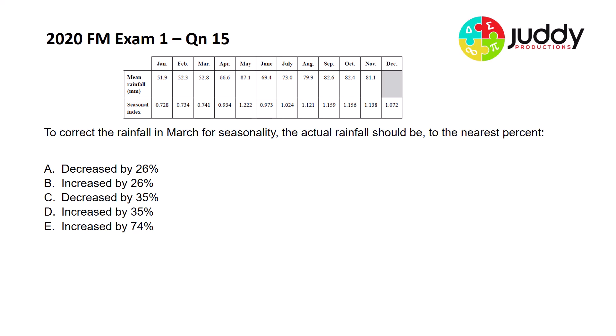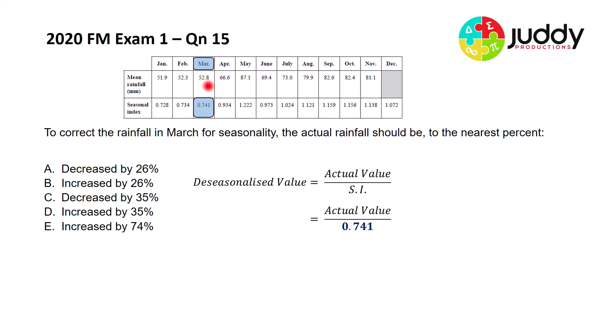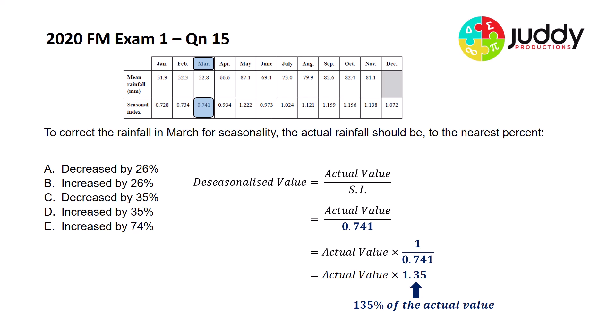A similar question from 2020: to correct the rainfall in March for seasonality, the actual rainfall should be — to the nearest percent. March has a seasonal index of 0.741. Dividing by 0.741 is the same as multiplying by 1 over 0.741, which as a decimal is 1.35. So we're effectively multiplying the actual value by 135%, meaning it has increased by 35% compared to 100%. The answer for this question is D.